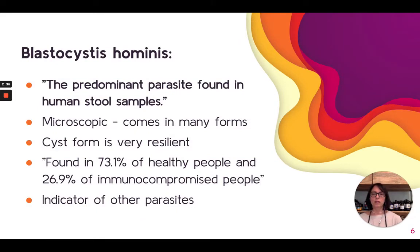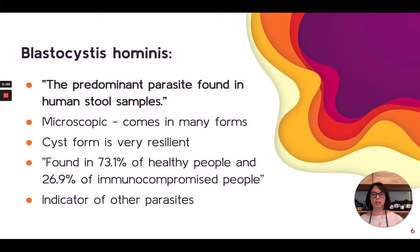Blastocystis is the most prominent found in stool samples, and many people actually think it's just part of our healthy microbiome — about 73% of healthy people have it. Interestingly, immunocompromised people have it less. To me, when it shows up it's an indicator that there are probably other parasites lurking that we're just not finding as readily. It's found on microscopic exam, comes in many forms, and has a cyst form — some parasites roll up into a tight ball, go dormant, wait out whatever onslaught is happening, and then come back to life. So this one can be very tough to get rid of.